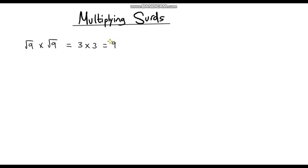Now is it a coincidence that our answer is 9? Well no, it's definitely not. Because if we start with the number 9, and then we square root it, and then we multiply it by itself, we're just going to get back to where we started because we're just undoing the operation. Remember, squaring and square rooting are inverse operations. So we take the square root, and then we square it, we're back to where we started.